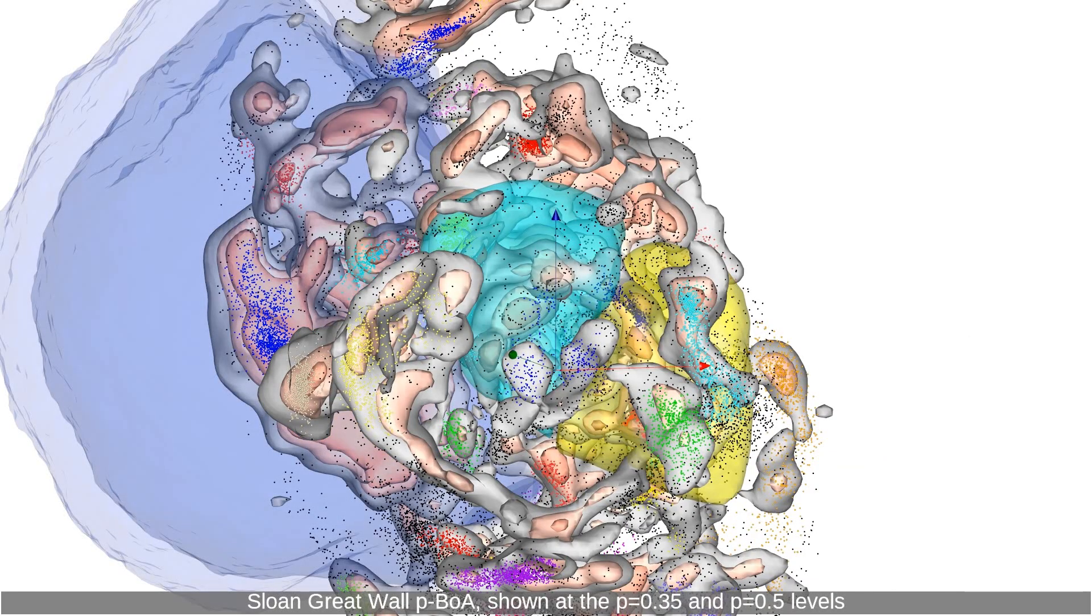Sloan Great Wall PBOA, shown at the p equals 0.35 and p equals 0.5 levels.